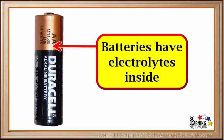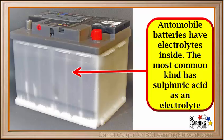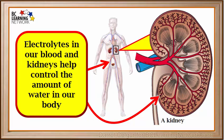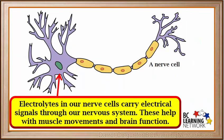Electrolytes, or solutions with ions, have many important applications. Batteries, like this alkaline battery, have electrolytes inside of them. Electrolytes in automobile batteries are usually in liquid form — they help conduct the electrical current and take part in the chemical reactions that make the current. The most common automobile battery contains sulfuric acid as an electrolyte, which is very corrosive and dangerous. Even fuel cells, which produce electricity for modern electric cars, have electrolytes inside of them. Electrolytes are also very important in our body — in our blood and kidneys they help control the amount of water, and in our nerve cells they carry electrical signals through our nervous system. These are needed for making our muscles move and making our brain function properly. A good balance of electrolytes in our body is very important.